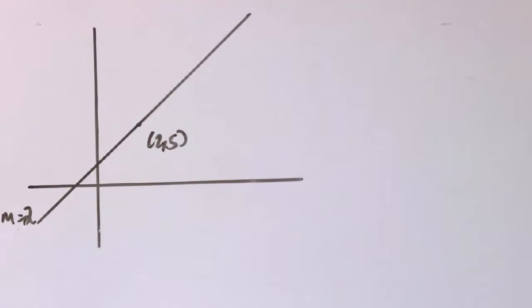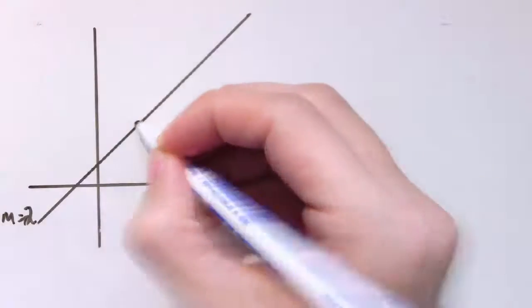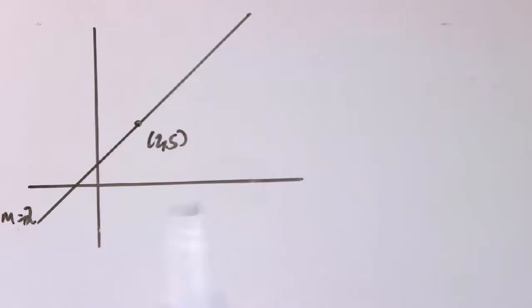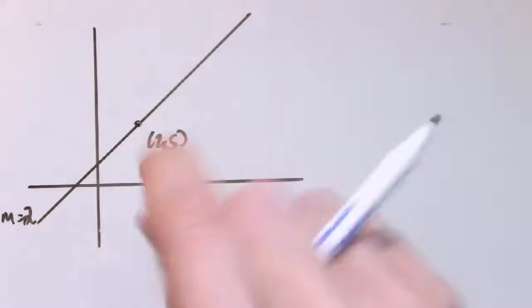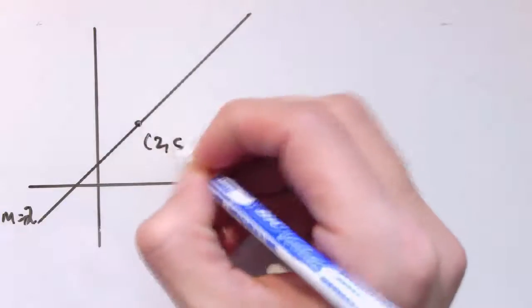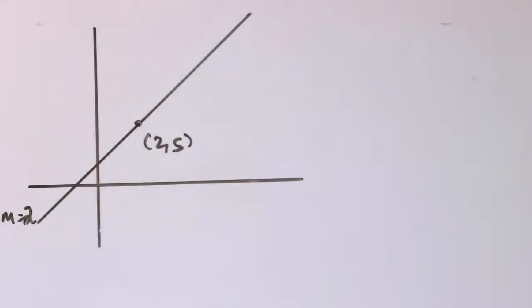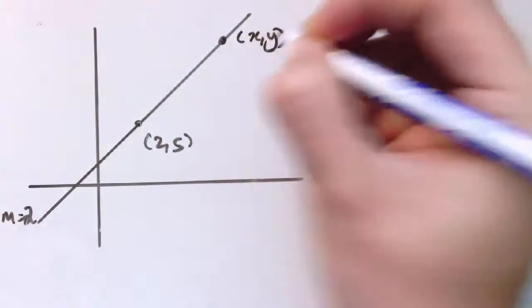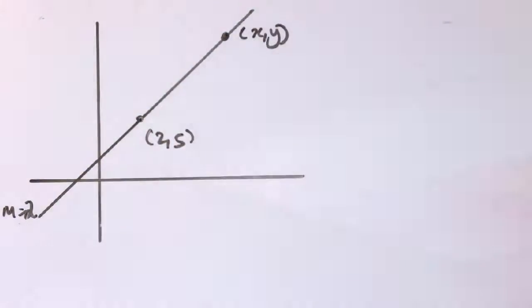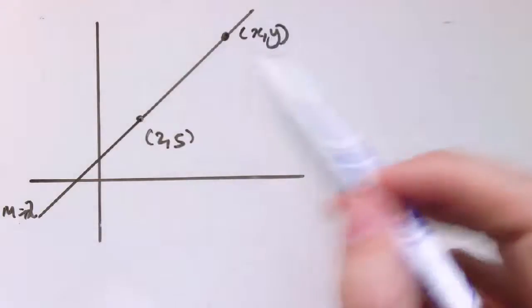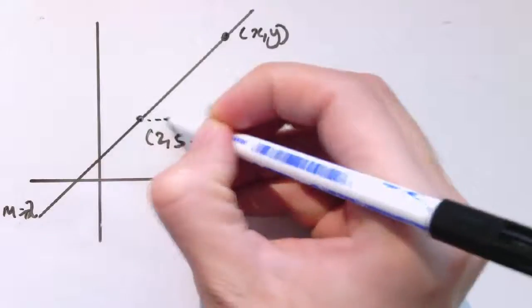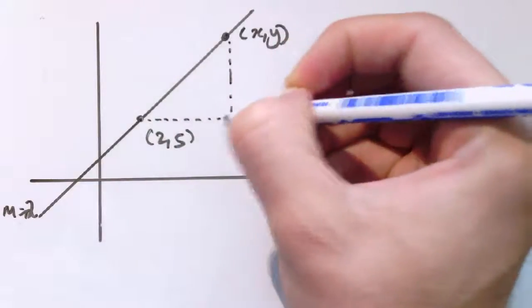Now here's my favourite form of a straight line — it's very mathematically neat and incredibly useful. Let's say I don't necessarily know the y-intercept, but I do know the line passes through a certain point — say the point (2, 5) — and the gradient is 2. I'll take a general point (x, y) anywhere on this line and draw a right-angle triangle going horizontally and vertically to think about the gradient.